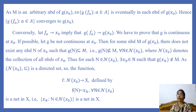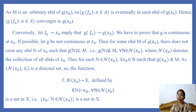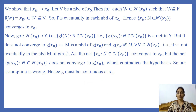Since N(x₀) is directed by the inclusion relation, it is a directed set. So the function F from N(x₀) to X defined by F(N) = x_N for every N ∈ N(x₀) is a net in X. We can denote it by x_N (N ∈ N(x₀)). We have shown that x_N converges to x₀.